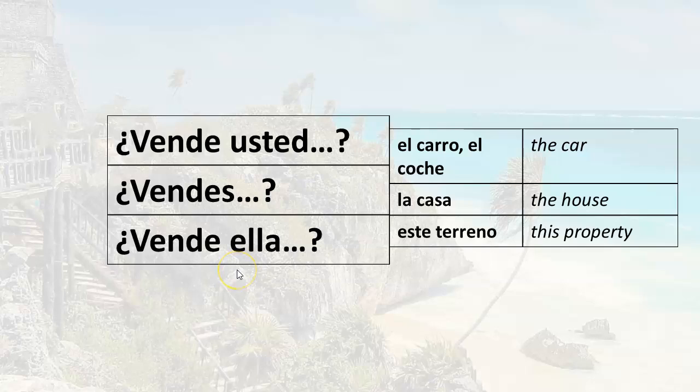Vende ella — does she sell? Does she sell the car? Vende ella el carro, or vende ella el coche. Does she sell the house? Vende ella la casa. Does she sell this property? Vende ella este terreno.